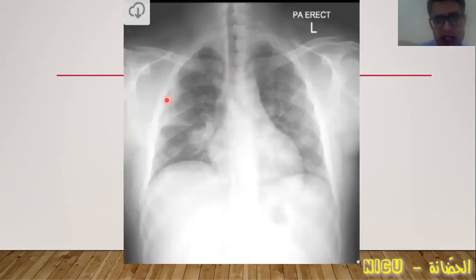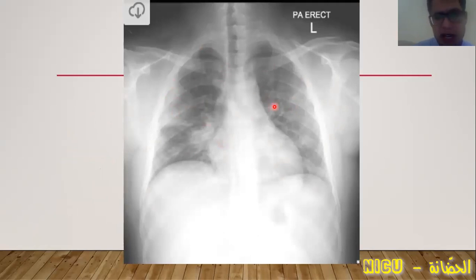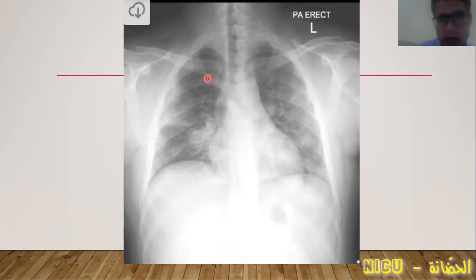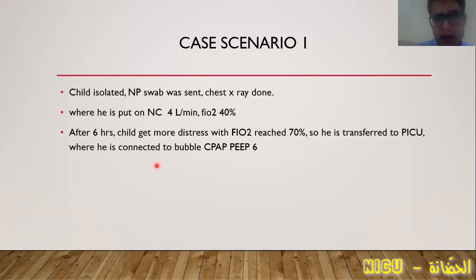The chest X-ray for this patient showed bilateral sub-pleural infiltration. The classic picture of COVID pneumonia is bilateral, sub-pleural, opaque shadows with ground-glass appearance — bilateral and symmetrical. However, not all cases show the classic picture. Any picture of pneumonia, bronchopneumonia, or lobar pneumonia can occur with COVID. Clinical symptoms are more important together with the presence of pneumonia.